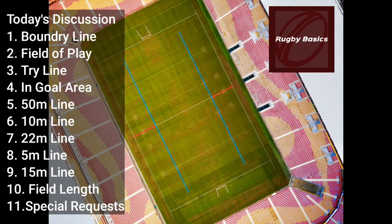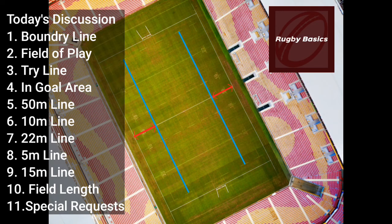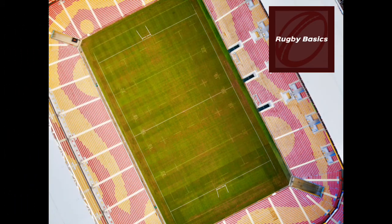The next line is the 15-meter line. The five-meter line we just discussed is also the indication of where the lineout starts, and the 15-meter line indicates where the lineout will stop. If a lineout is taken and the ball is thrown over the 15-meter line, that is also an indication that the lineout is over. This will be discussed in a future video covering lineouts.